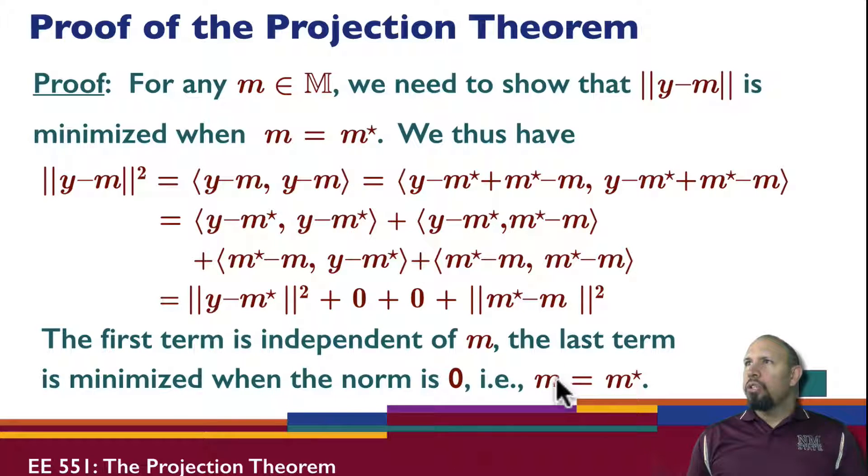This shows that m star is the minimizer. For any other m in the subspace, I will get a larger difference between y and m. So this shows that minimization. This proves the projection theorem.